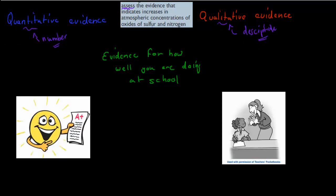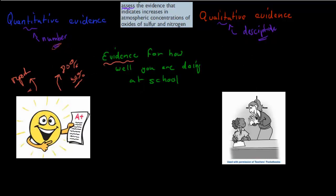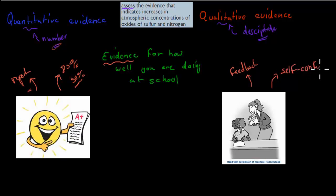I'll give you a quick example to make it easy to understand. If I'm asked for the evidence of how well someone's doing at school, the quantitative evidence — the number evidence — would be their report card: how good are their grades, are they getting A's, B's, D's, or what percentage did they get in the exam, like 80% or 50%. These are numbers we can use to answer that question. Whereas qualitative evidence could be feedback from the teachers — what have the teachers been saying about your performance? That's descriptive evidence. Or just your own self-confidence: are you feeling confident in school? That could also be an assessment of how well you're doing.